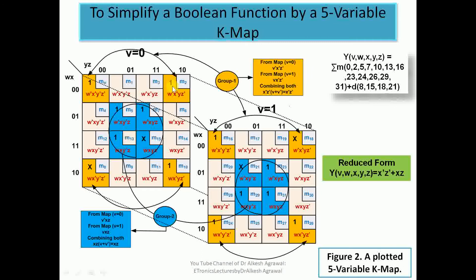We can write Group 1 directly in reduced form. Since this group is common to both the V=0 and V=1 maps, the variable V is eliminated. Focusing on the first and last rows where WX is 00 and WX is 10 — W changes and X is fixed to zero, giving X̄. Focusing on the first and last columns where YZ is 00 and YZ is 10 — Y changes and Z is fixed to zero, giving Z̄. So the reduced form for Group 1 is X̄Z̄.